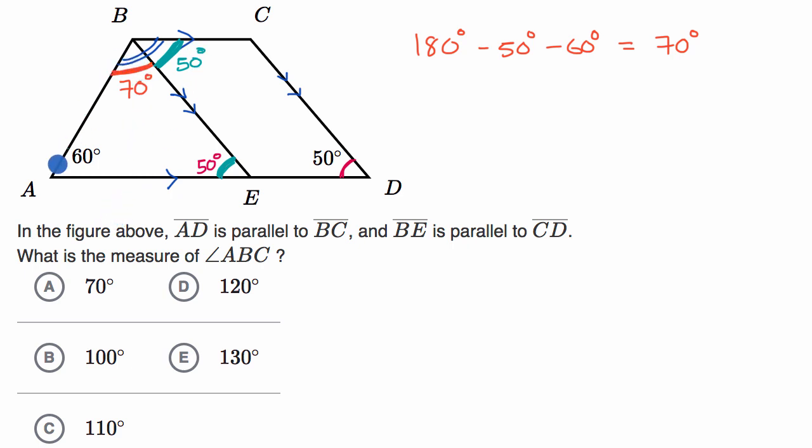And so angle ABC, which is this thing that I've done in these two blue lines, is just going to be the sum of these two. 70 degrees plus 50 degrees is going to be equal to 120 degrees, and we're done.